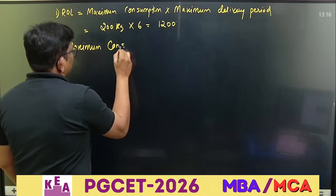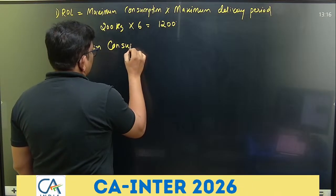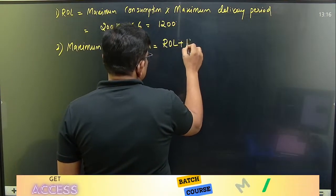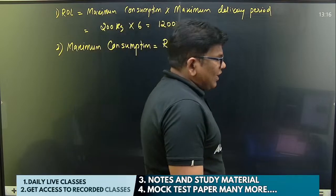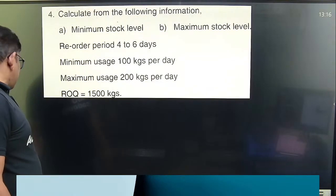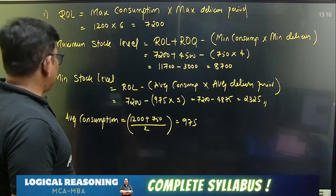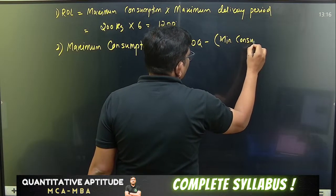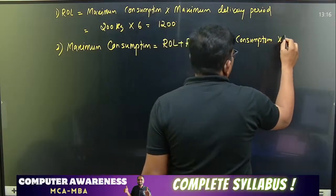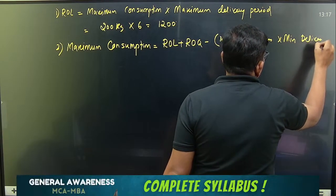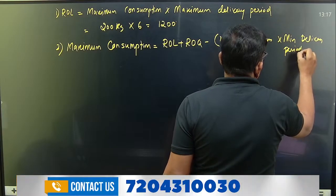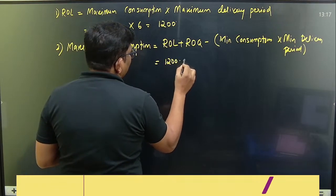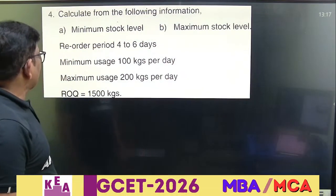Maximum stock level is equal to reorder level plus reorder quantity minus maximum consumption. The formula is: reorder level plus reorder quantity, minus minimum consumption into minimum delivery period. Reorder level is 1,200 and reorder quantity is 1,500.